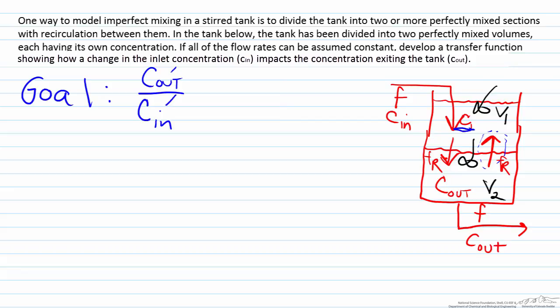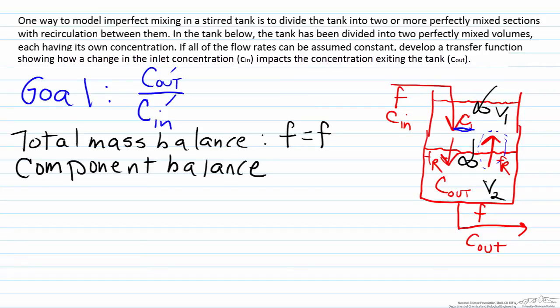Now that we see the fact that we have an interacting system, let's develop the mass balances to describe the process. A total mass balance will be unnecessary because we'll show that F equals F. Instead we're going to focus on component balances. Because there is no reaction, our balances are going to be straightforward: accumulation equals in minus out. We're going to analyze this for both the upper and lower portions.